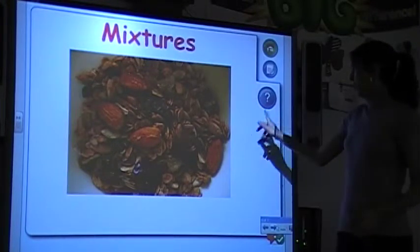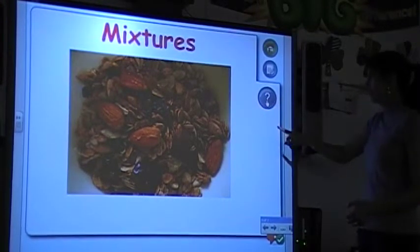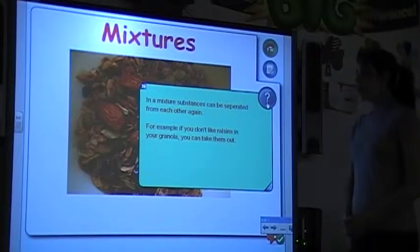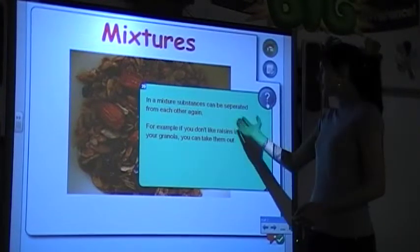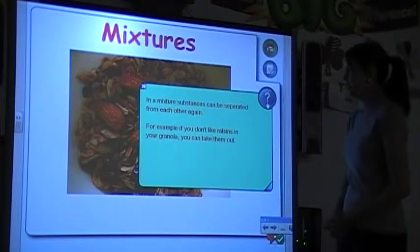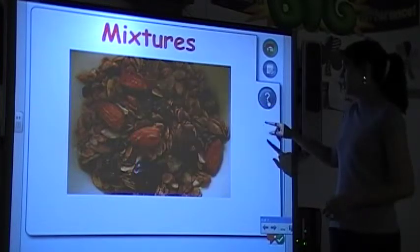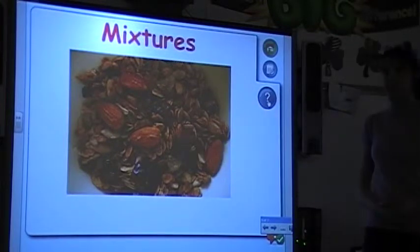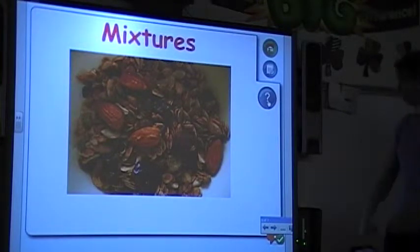Next, we have an example of a mixture. By clicking on the question mark, you're able to give additional information. A mixture's substances can be separated from one another. For example, the granola, if you don't like raisins in your granola, you can simply just take them out. So that gives a good picture and example of a mixture.